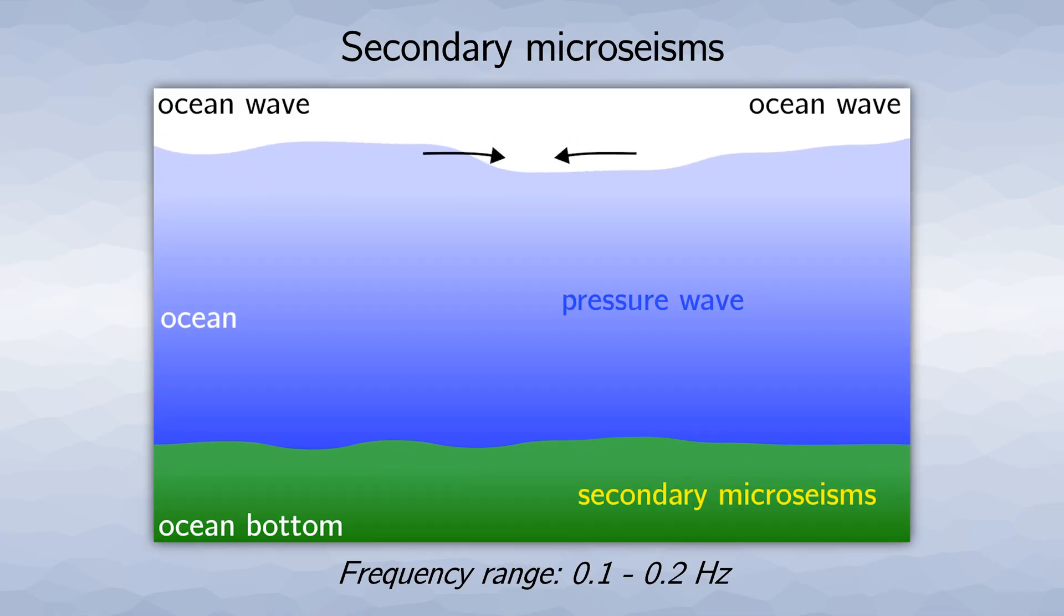One mechanism that generates ambient seismic noise is when two ocean waves overlap, which in turn create a pressure wave that travels vertically down to the ocean floor. This then creates a tiny displacement everywhere at the ocean bottom, the so-called secondary microseisms.